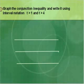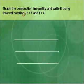The first problem: graph the conjunction inequality and write it using interval notation. T is greater than one and T is greater than four. The word 'and' makes this a conjunction. You'll see 'and' and 'or' when doing these problems, and they mean two different things.